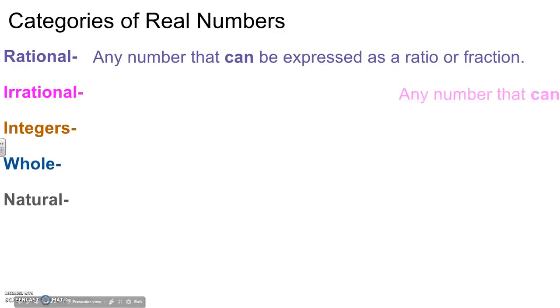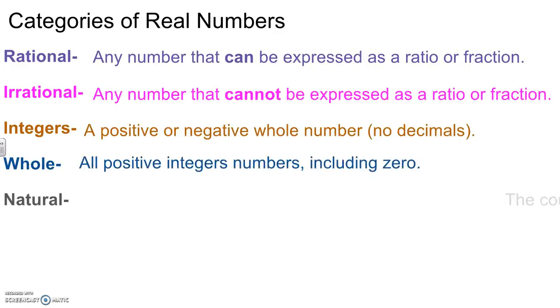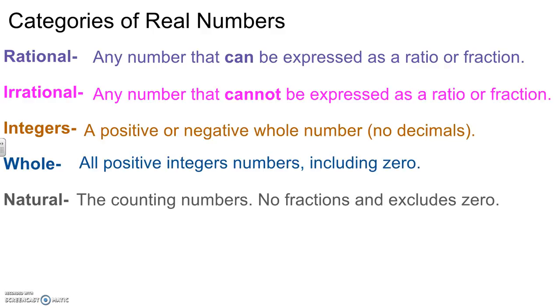If we look at the definitions for each. We can see here the difference between irrational and rational. So the numbers that can be expressed as a ratio or fraction and any number that cannot be expressed as a ratio or fraction. Integers, whole numbers, and natural numbers are a little bit more closely related. So an integer is a positive or negative whole number. So no decimals. No fractions that cannot be simplified to a whole number. Whole numbers are all positive integers including zero and natural numbers are the counting numbers. Think what you can use on your fingers. For all intents and purposes we'll look at whole numbers and natural numbers in one category.